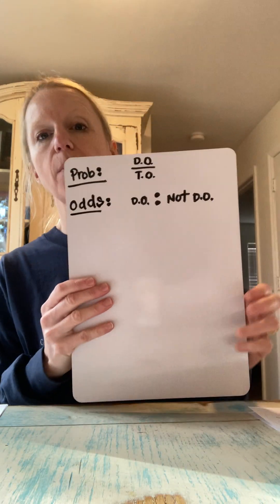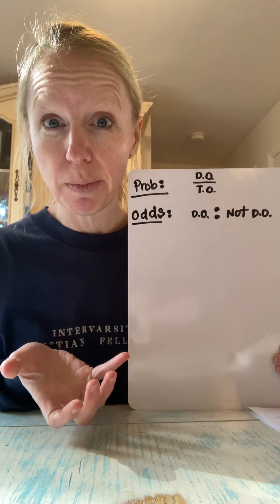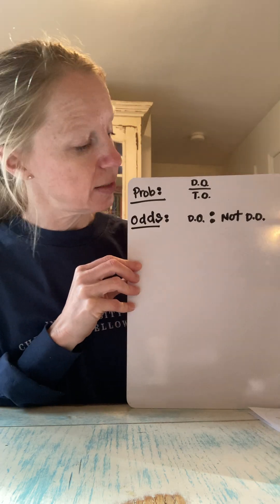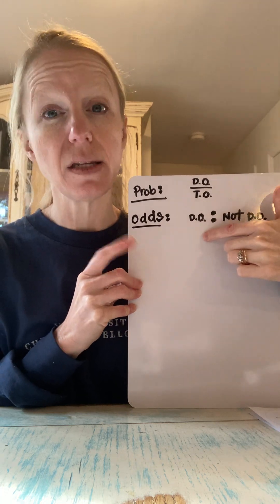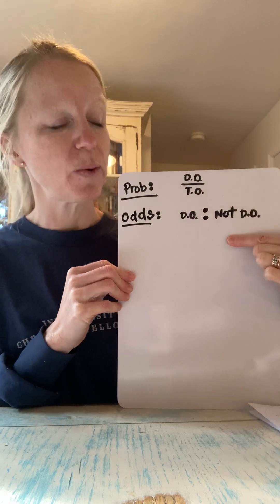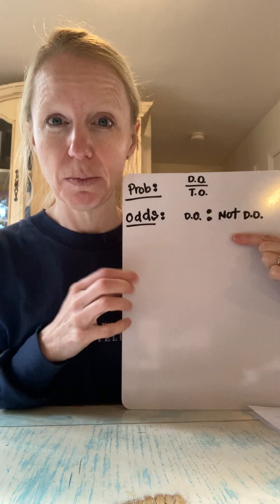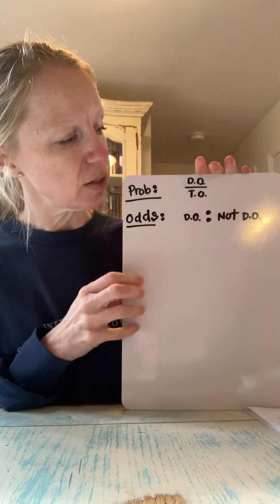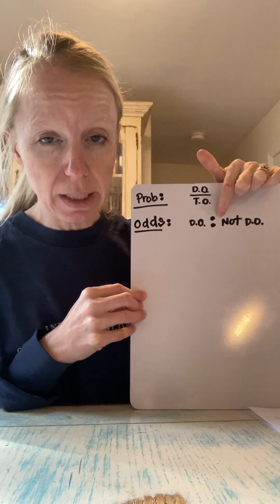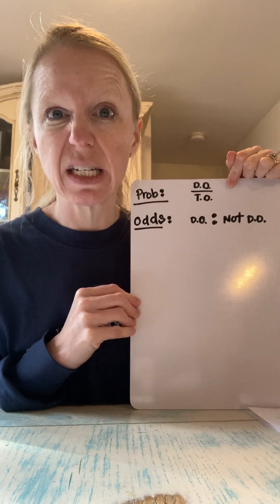A couple of things about odds that are different from probability. We define probability as our desired outcome over our total possible outcomes, whereas odds is our desired outcome compared to our not-desired outcome. You'll see examples as we work through experiments. Also, we generally write odds with a colon and probability as a fraction. So when you say 'what are the odds of something,' that actually means something different than 'what is the probability that something will happen.'